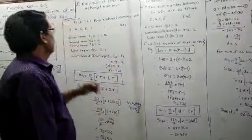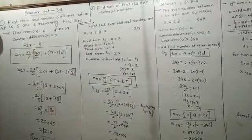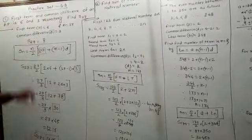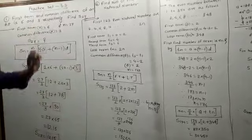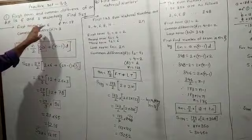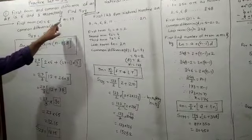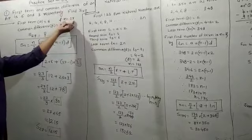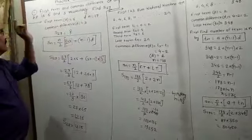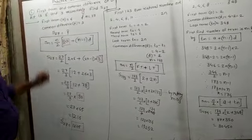Friends, we have to start with Practice Set 3.3, the example number first. The first term and the common difference of an AP is 6 and 3 respectively. Find S27. First term is given: A is equal to 6. Common difference is given: D is equal to 3. We have to find out S27, means N is equal to 27.